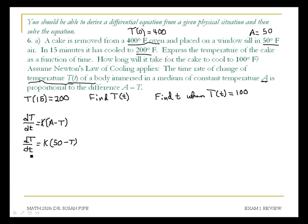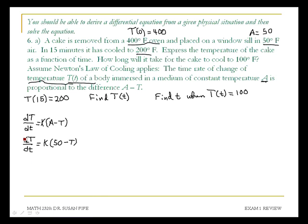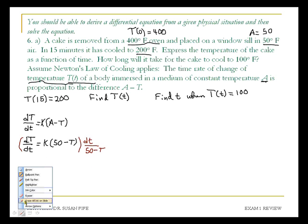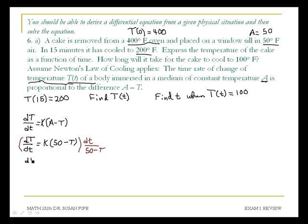This equation is linear and also separable, so I can solve it either way. Solving it as a separable ODE, I'm going to multiply both sides by dt — that puts time on the right side. Then I need temperature on the left side, so I'll divide by (50 minus T). That gives me dT over (50 minus T) equals K dt. From here I can integrate both sides.